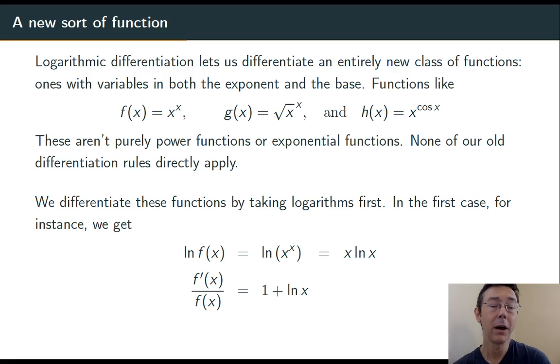The whole point here was to get f prime, so I move the f of x over to the right, and then replace it with what it's equal to, x to the x. Overall, 1 plus ln of x times x to the x.